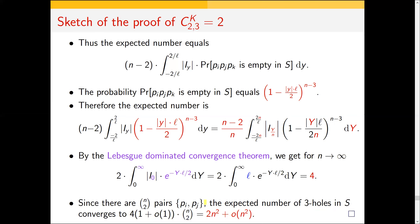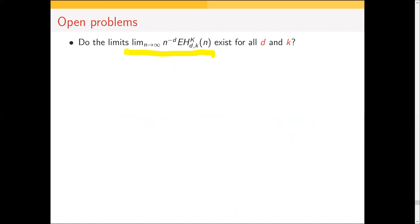That was a quick sketch, but I hope the idea is clear. In general the approach is the same but more complicated — for four-holes we have two additional points and more integrals to handle. Now let me conclude with open problems. First, we focused on leading constants defined as limits, but we don't actually know whether these limits always exist. We know they exist in the plane for any k and for empty simplices in any dimension, but not in general.